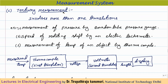Tertiary measurement involves more than one translation. An example is measuring pressure using a Bourdon tube pressure gauge. Similarly, measuring the speed of a rotating shaft using an electric tachometer is tertiary: the rotor rotates a generator, which produces a voltage, and that voltage is converted into dial movement for display — two conversions are involved.